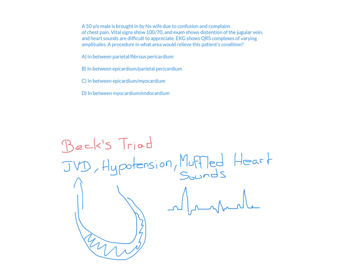The jugular venous distension occurs because the jugular vein is directly connected to the inferior vena cava, which drains into the right atrium. If a huge amount of fluid is impeding the left ventricle from contracting, that fluid backs up into the right heart — just like a traffic jam, the blockage is behind it. So the right heart fills up and regurgitates into the jugular vein. That's how we get the first part of Beck's triad.